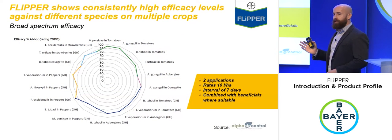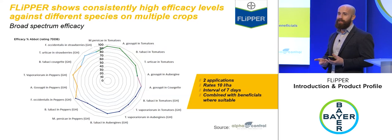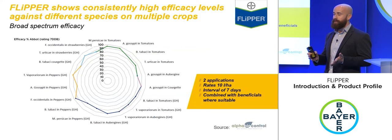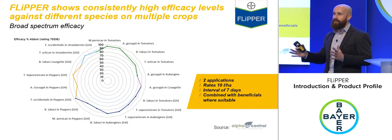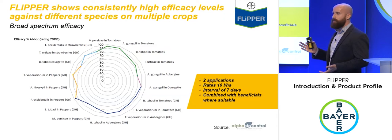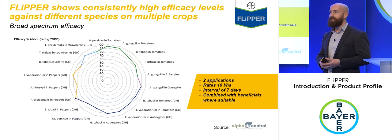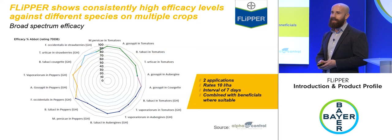Summarising the Alpha Bio trials: the recommendation is to apply at pest build-up, right at the start of infestation, with two applications at one percent within a seven-day window. Across a range of crops and pests, efficacy was extremely good — 70 to 90 percent control in almost all trials, confirming it's an incredibly active product.